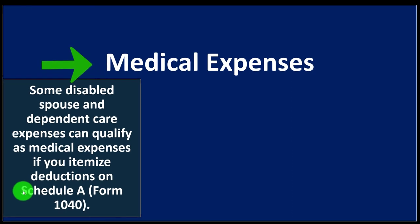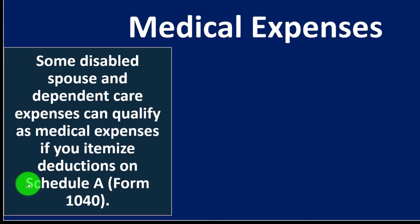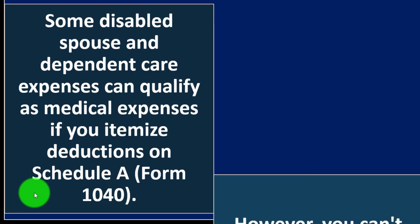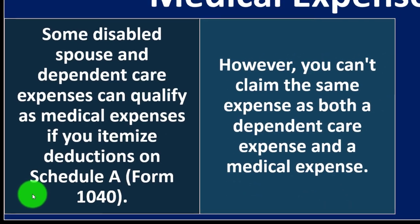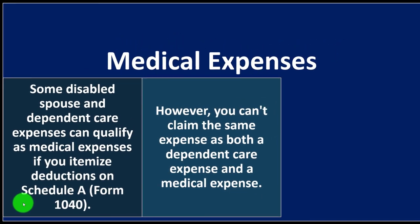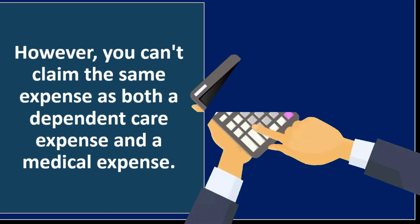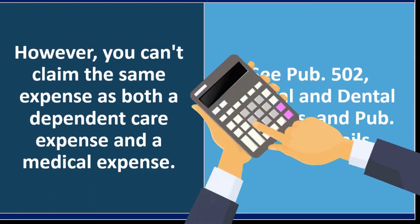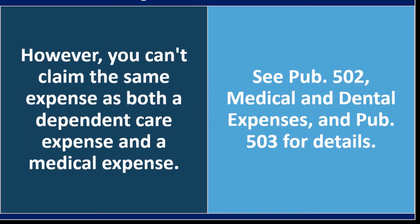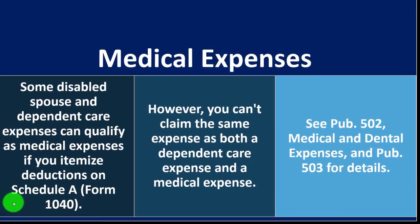Medical Expenses. Some disabled spouse and dependent care expenses can qualify as medical expenses if you itemize deductions on Schedule A, Form 1040. However, you can't claim the same expenses as both dependent care expenses and medical expenses — no double dipping. If you're deducting them on Schedule A, you can't also get a benefit for the credit calculation on the same amounts. See Publication 502, Medical and Dental Expenses, and Publication 503 for details.